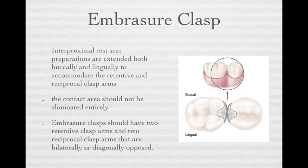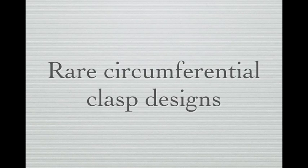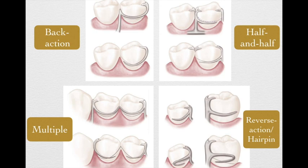The embrasure clasp should have two retentive arms and two reciprocal arms, which need to be bilaterally or diagonally opposed, providing better retention and reciprocal function. We also have four different rare circumferential clasp designs mentioned in textbooks, but they are rarely used nowadays due to their complexity and fabrication difficulty.